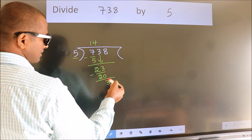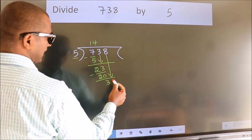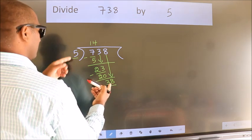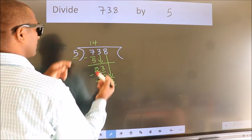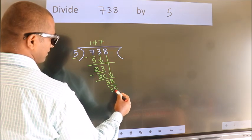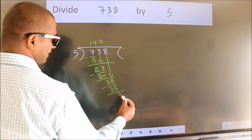After this, bring down the beside number. So 8 down. So 38. A number close to 38 in the 5 table is 5 sevens 35. Now we subtract. We get 3.